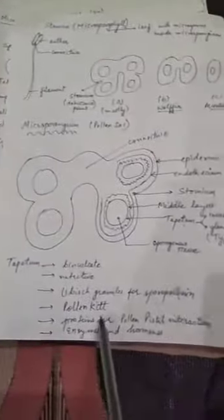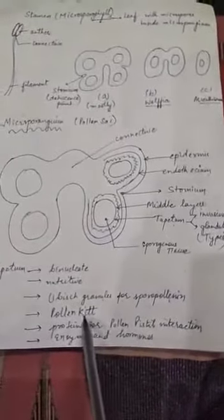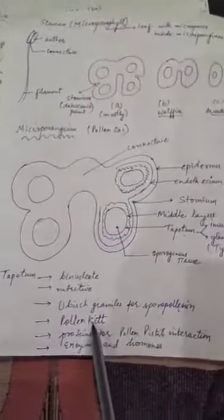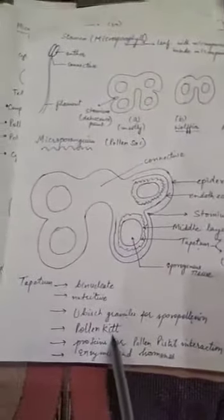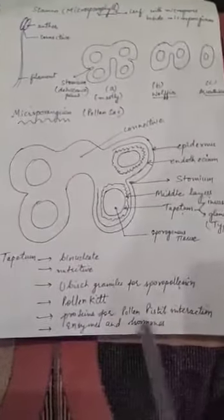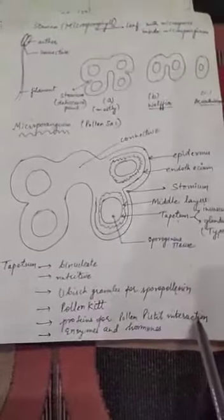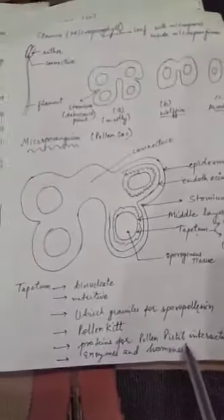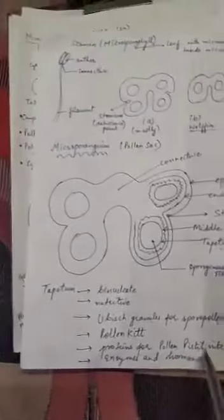Pollen kit is a modified form of carotenoids and flavonoids which are important for being sticky and they stick to the beak and the legs and the wings of the insects. Tapetum also produces proteins which are important in pollen-pistil interaction. This interaction is important because germination of pollen grain is controlled by this interaction and tapetum also releases enzymes and hormones.